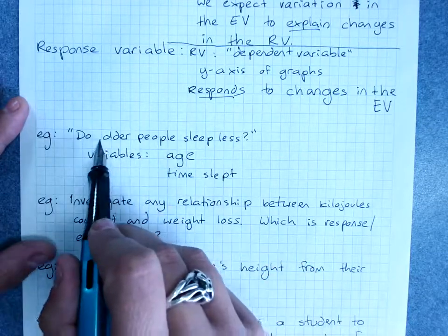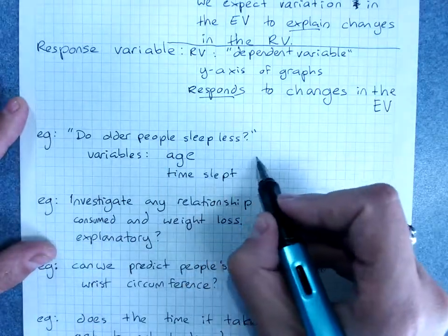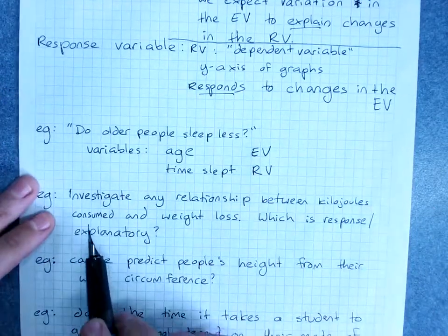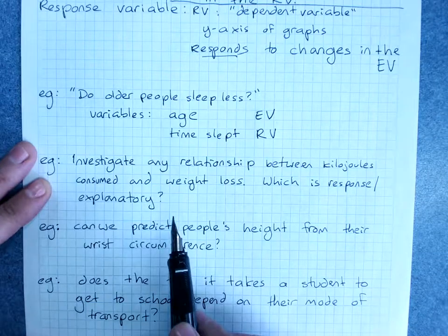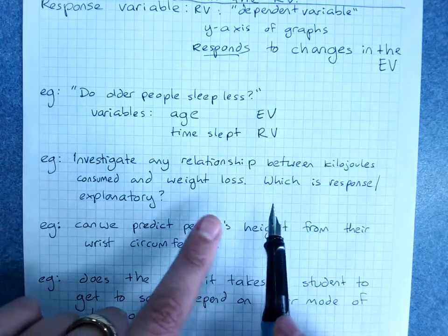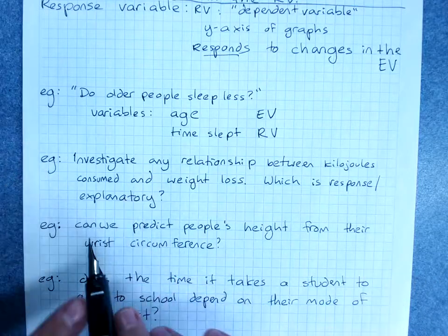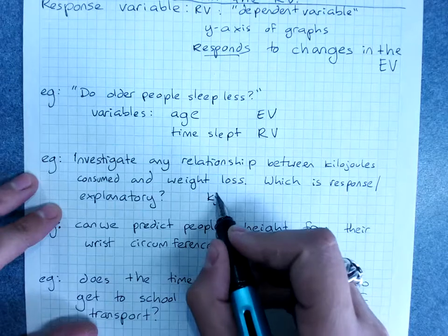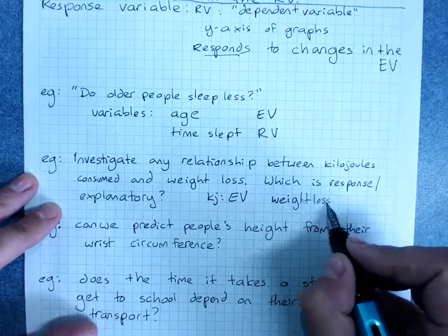When we look at this, we're saying does our age explain sleeping less? So the way our question is worded also gives us a clue. Age is our explanatory variable; time slept is our response variable. Now: investigate any relationship between kilojoules consumed and weight loss — which is response, which is explanatory? Do the kilojoules I've consumed explain my weight loss? Yes. Or does the weight loss explain the amount of food I'm eating? Less so. You can often say there's an argument for going both ways, but you're looking for the one that works best. Kilojoules consumed explains weight loss — kilojoules is the explanatory variable, weight loss is the response variable.